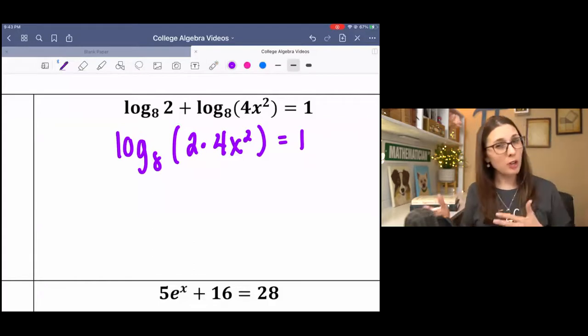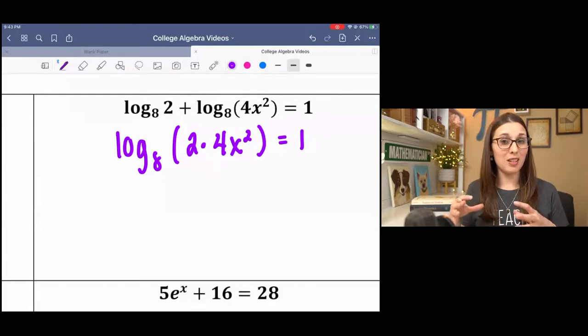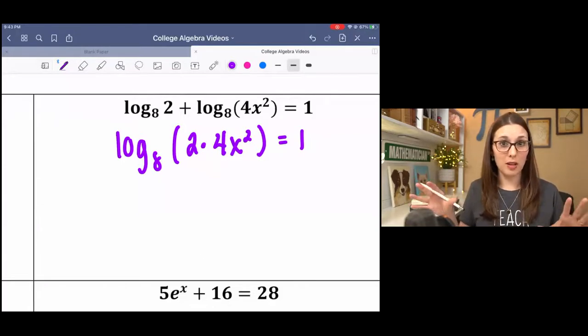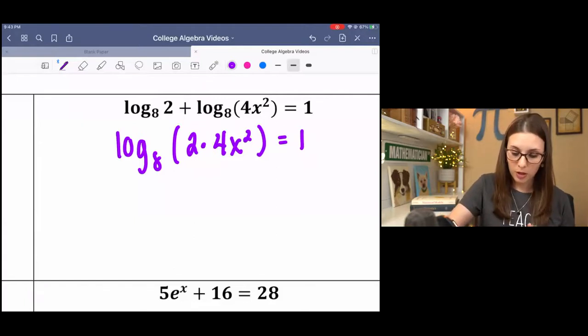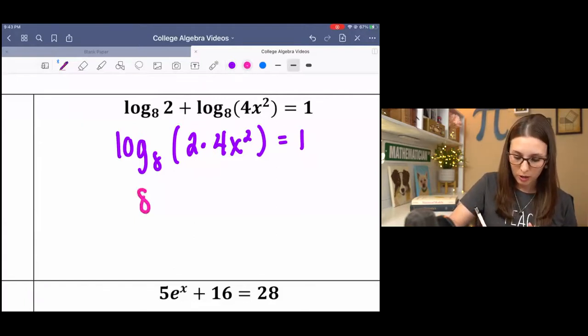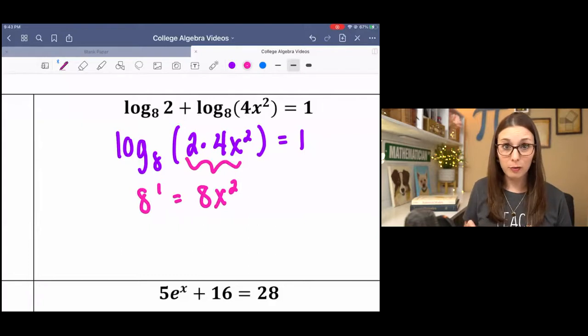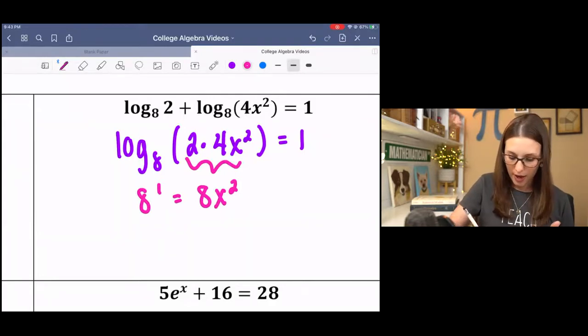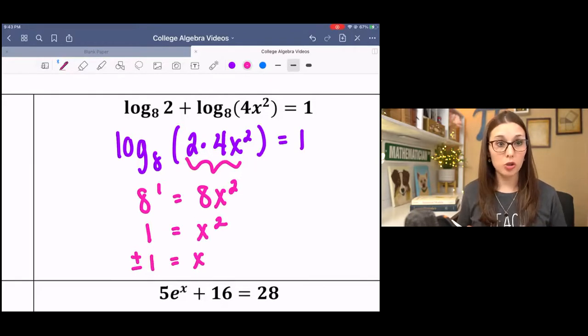So I can't just set them equal to each other, because in order to do that, I have to have logs with the same base. But what I can use is the converting to exponential form. So I can convert this to 8 to the first equals 8x squared, and then solve for x, divide by 8. Take the square root. And this is a situation where we're going to want to check the solutions. I got positive and negative 1, because when you take the square root of both sides, you have to consider both the positive and the negative case.